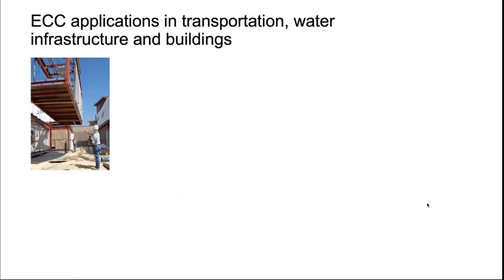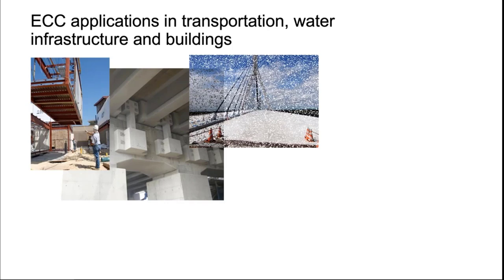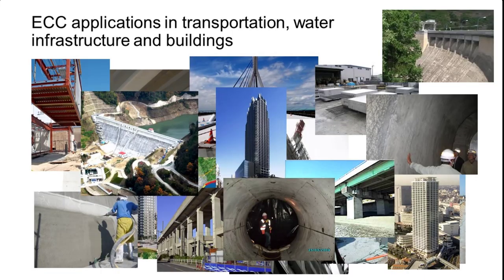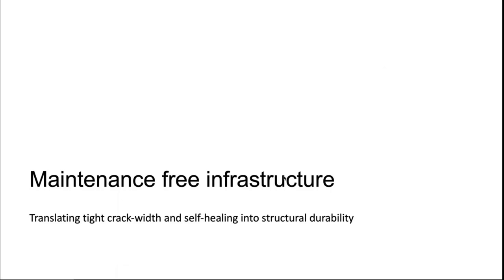Structures built with ECC include buildings, transportation infrastructures, and water infrastructures. These structures can be built precast or on site, and used in new construction as well as in repair or retrofit. A variety of structures have been built or repaired with ECC over the last decade or so, and they are now found around the world. The material is relatively new but is emerging from the lab to the field.